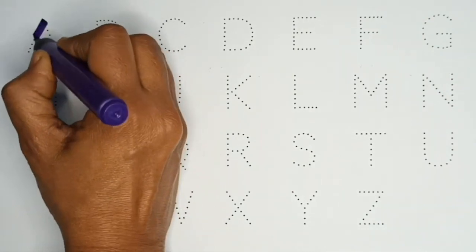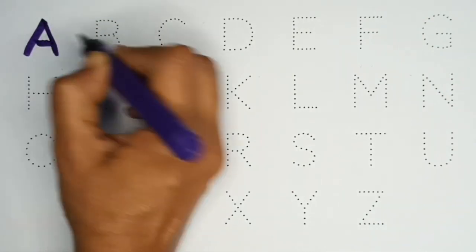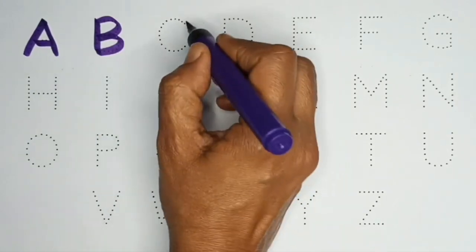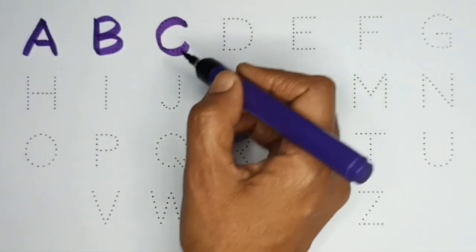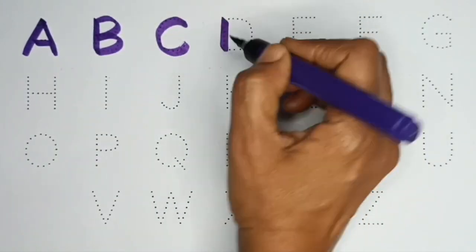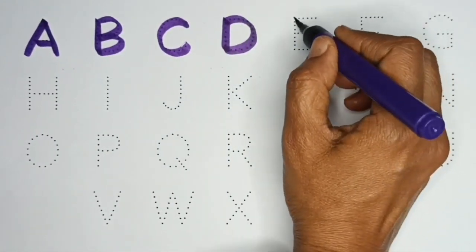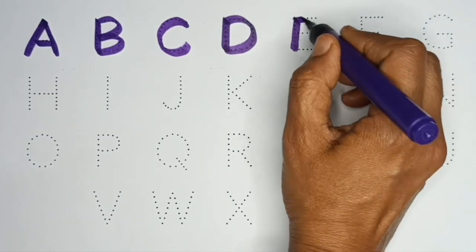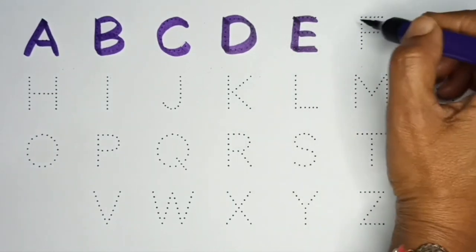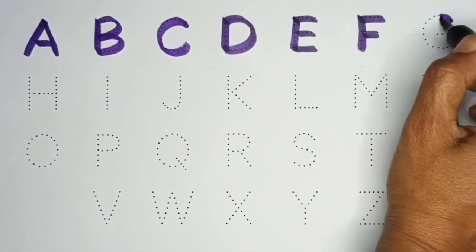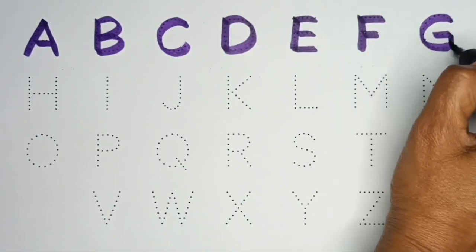A. A. A for apple. B. B for ball. C. C for cat. D. D for dog. E. E for elephant. F. F for fish. G. G for grapes.